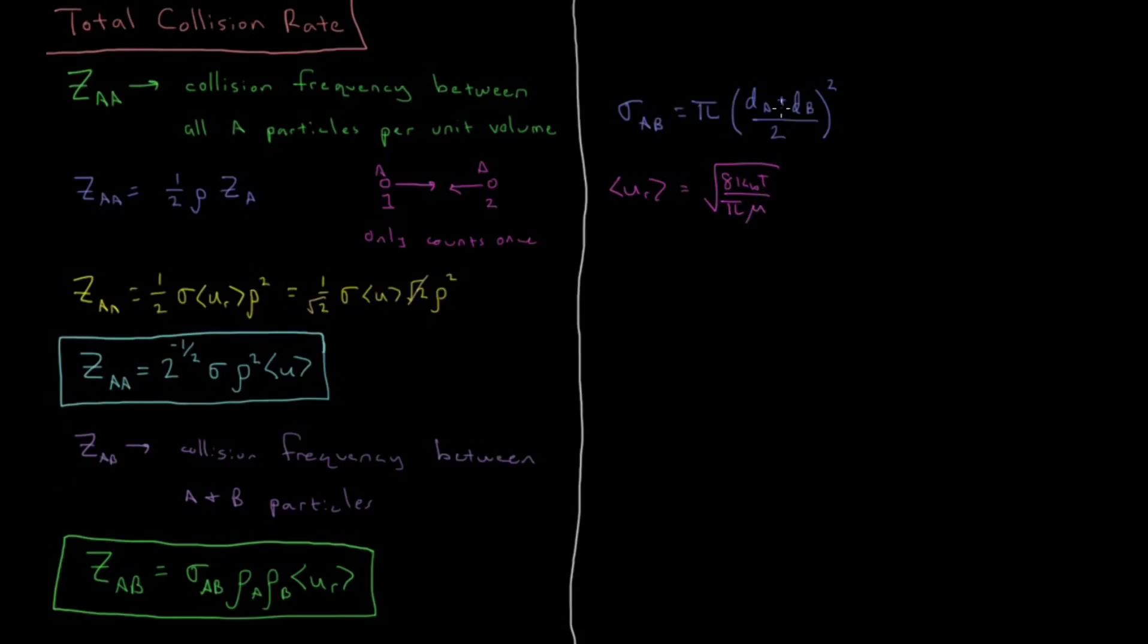But we have to remember now that the reduced mass is not just going to be m over 2. The reduced mass is going to be whatever it comes out to be due to the relative masses of the particles, which is just the product of the particles' masses divided by their sum.